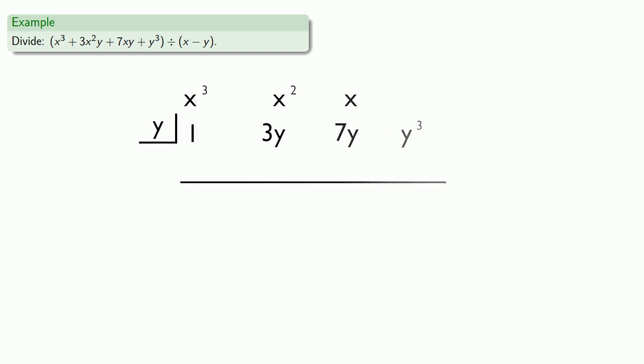So remember, our synthetic division records the coefficients, and each column corresponds to some power of x. So we can read our dividend as being 1x cubed plus 3yx squared plus 7yx plus y cubed, which is what we want it to be. And we're ready for synthetic division.